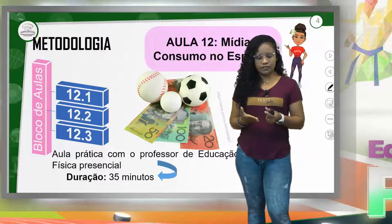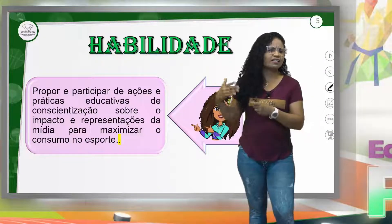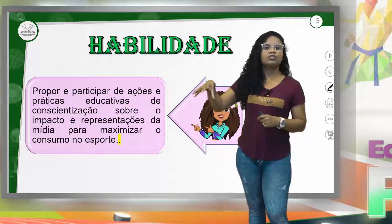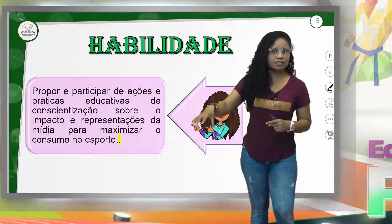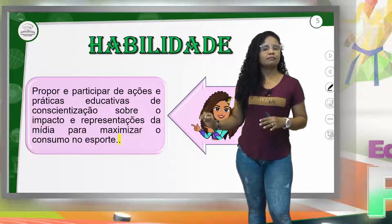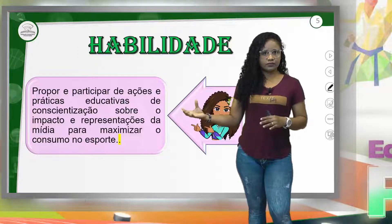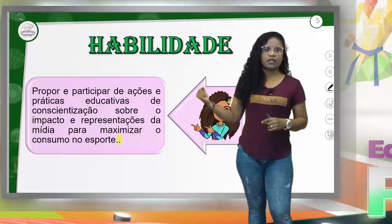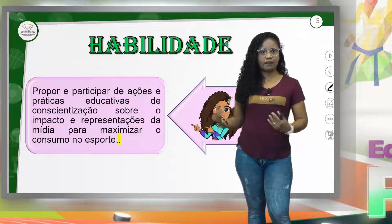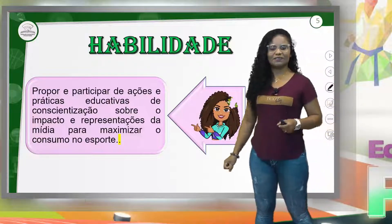Dentro dessa orientação também temos três etapas bem interessantes. Antes de vê-las, é importante saber qual é a habilidade desta aula: propor e participar de ações e práticas educativas de conscientização sobre o impacto e as representações da mídia para maximizar o consumo no esporte. Essa é a dinâmica — propor e participar de ações ligadas a essa temática.